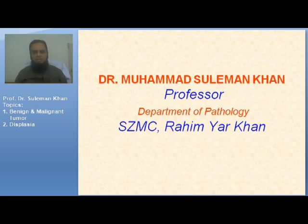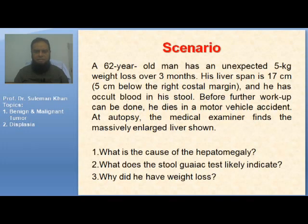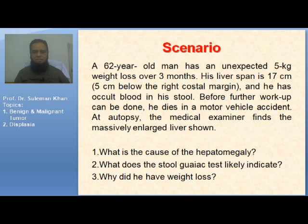Bismillahirrahmanirrahim. We are continuing with the lecture on Neoplasia, and we begin with a scenario. A 62-year-old man has an unexpected 5 kg weight loss over 3 months. His liver span is 17 cm, 5 cm below the right costal margin, and he has occult blood in his stool. Before further work-up can be done, he dies in a motor vehicle accident. At autopsy, the medical examiner finds the massively enlarged liver shown in the image.